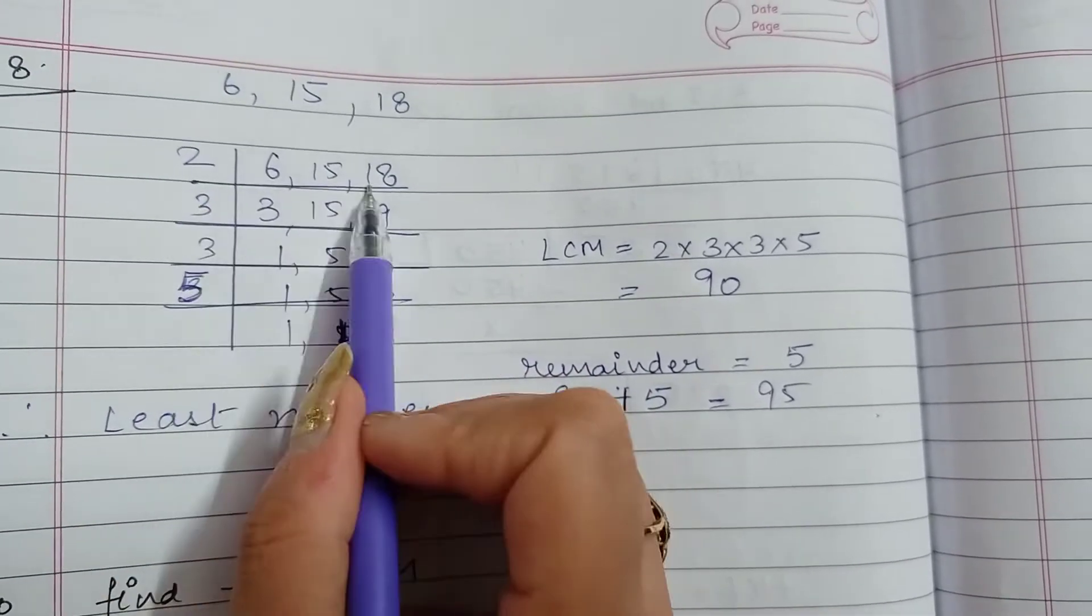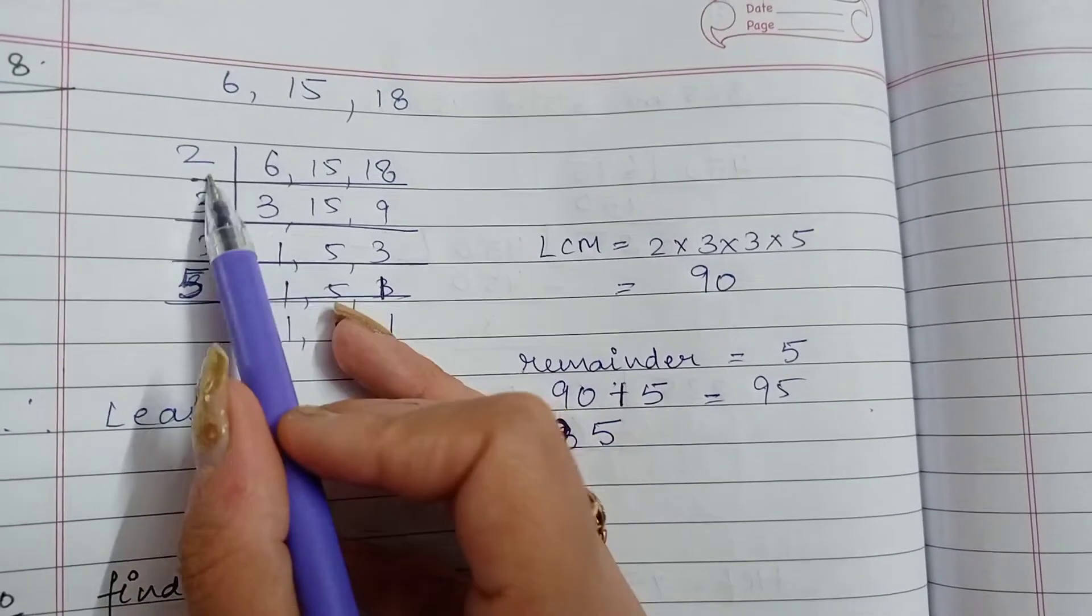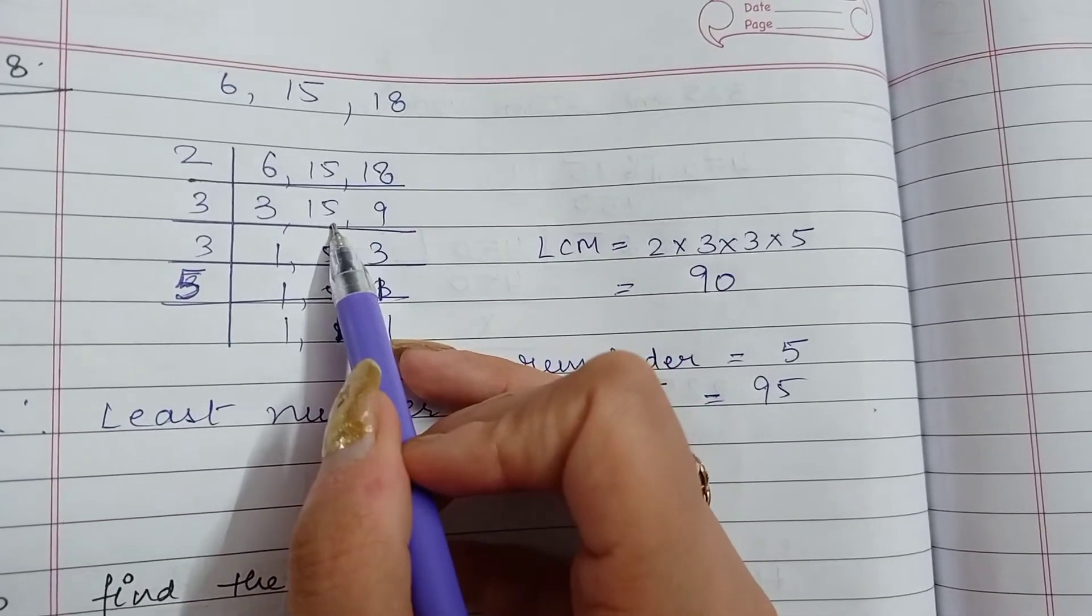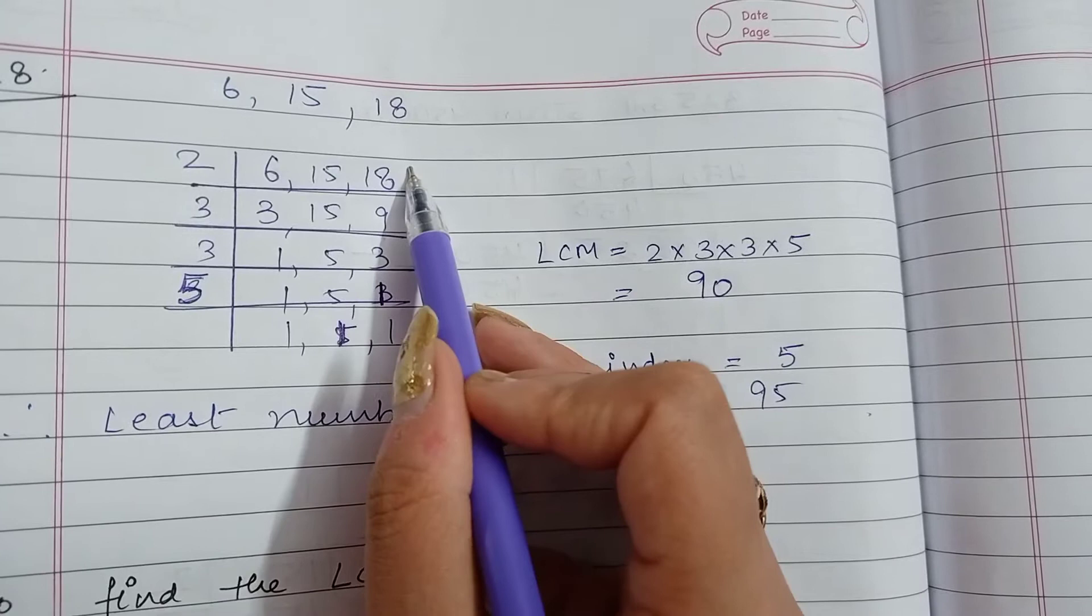Again I am using the long division method here. 2, 3's are 6, 2, 15 is not going. I have copied 15 as it is. 2, 9's are 18.